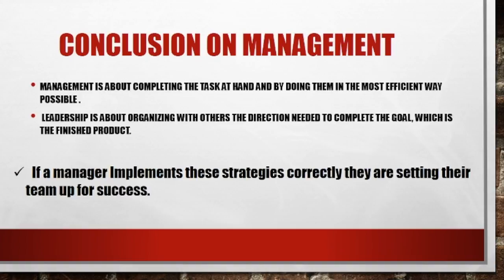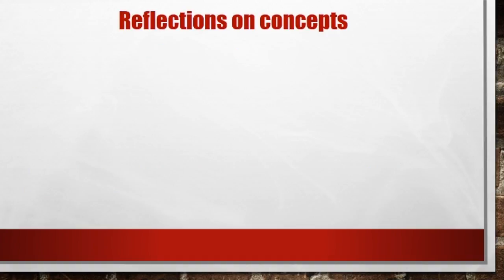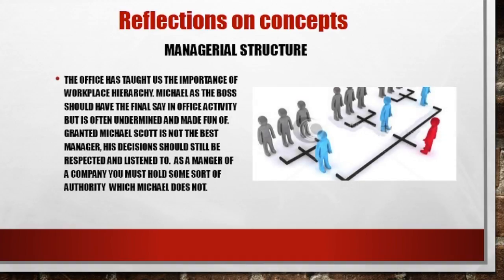Conclusion on management: management is about completing the tasks at hand and doing them the most efficient way possible. Leadership is organized with others and directions needed to complete the goal, which is the finished product. If a manager implements these strategies correctly, they are setting their team up for success. Regarding managerial structure, The Office has taught us the importance of workplace hierarchy. Michael, as a boss, should have the final say in office activity but is often undermined and made fun of. As a manager, you must hold some sort of authority, which Michael does not.